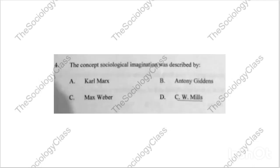Question number four: 'The concept of sociological imagination was described by...' — Karl Marx, Anthony Giddens, Max Weber, or C. Wright Mills? This is a very repeated question. The correct answer is D — C. Wright Mills. Today's paper has mostly repeated questions from previous years' PYQs. Since I have already explained these concepts in depth, I won't discuss them again here. Please follow the full playlist thoroughly.